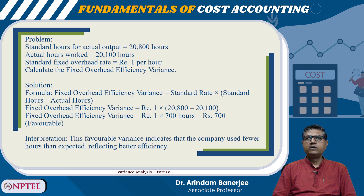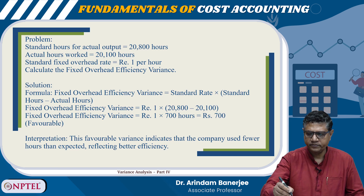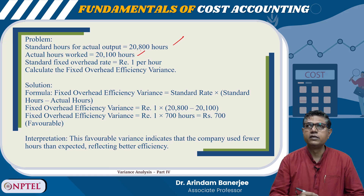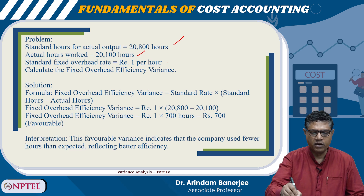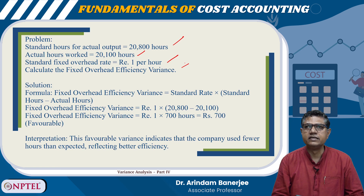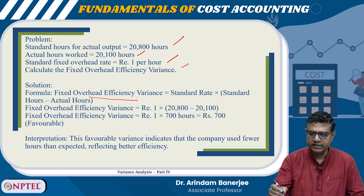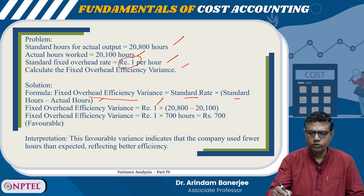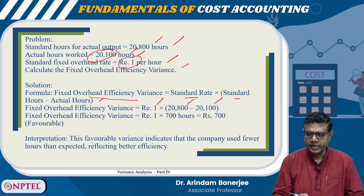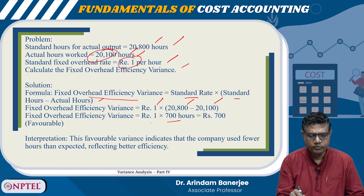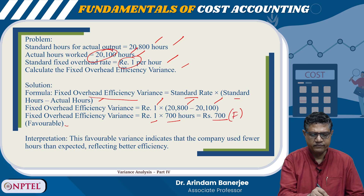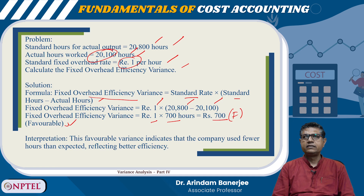Here is another problem for fixed overhead efficiency variance. Standard hours for actual output are 20,800 hours, actual hours worked are 20,100 hours, and the standard fixed overhead rate is rupee 1 per hour. The formula is: fixed overhead efficiency variance equals standard rate into standard hours minus actual hours. So it is rupee 1 into 20,800 minus 20,100, which is rupee 1 into 700, giving rupees 700 favourable. This favourable variance indicates that the company used fewer hours than expected, reflecting better efficiency.